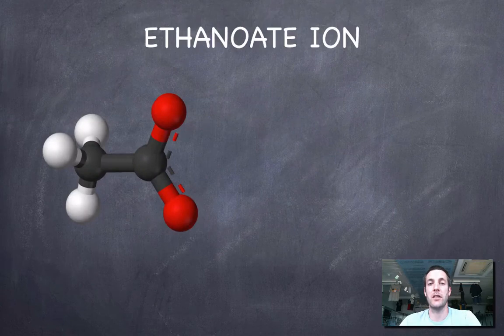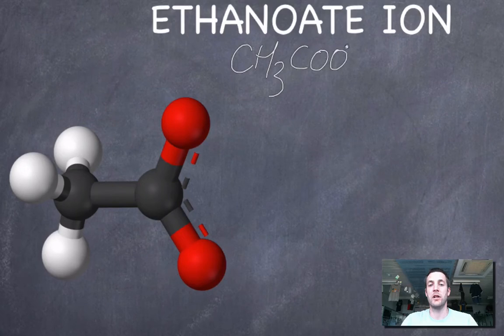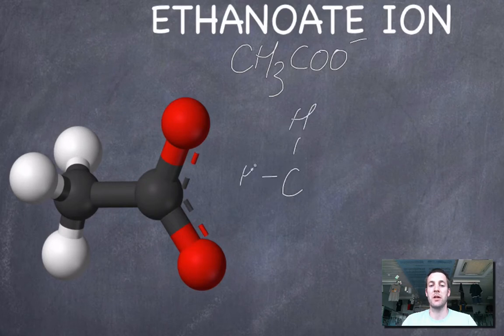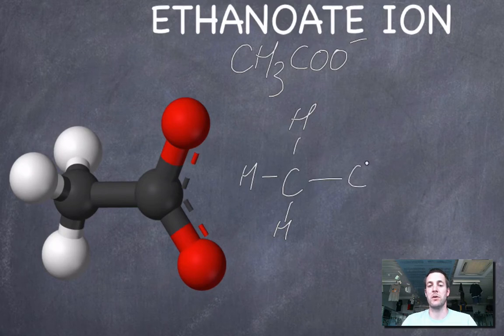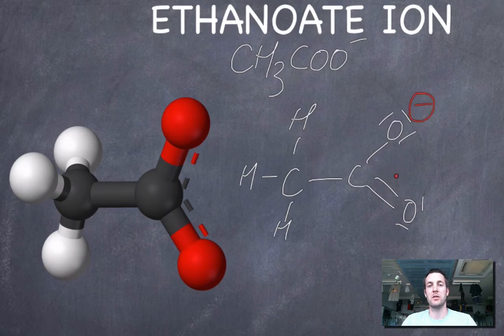First of all let's look at an ethanoate ion and let's try drawing a Lewis structure for it or an electron dot diagram. Now by the time you've done the organic topic you'll know straight away that the ethanoate ion has that formula and if you drew a Lewis diagram for it you'd probably be able to figure out that it has this structure here as kind of shown here. We've got a single bond to one of the oxygens, a double bond to the other, we've got a lone pair here, two lone pairs there, three lone pairs here, and that leaves us with a negative charge on this oxygen.